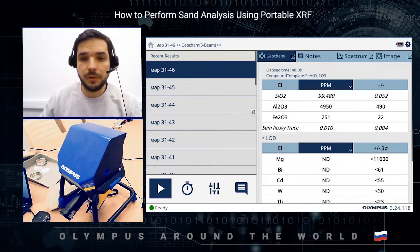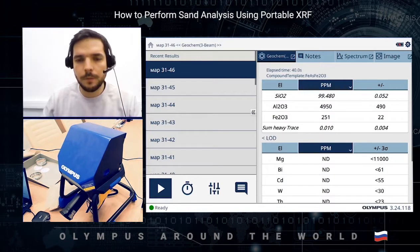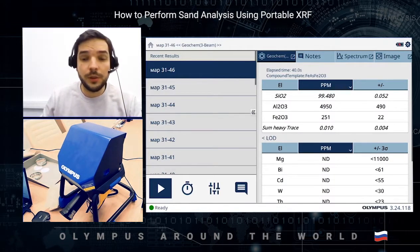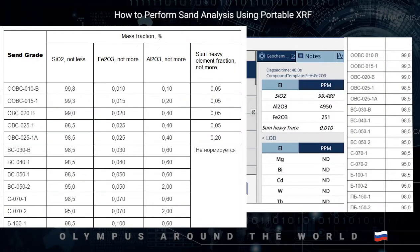The request from the client was: can we determine with the Vanta the type of sand according to this classification? This is a Russian classification of different sand grades, and you can see that the sand grade is determined by three major elements: silicon dioxide, iron oxide, and aluminum oxide, plus a summary trace element fraction.